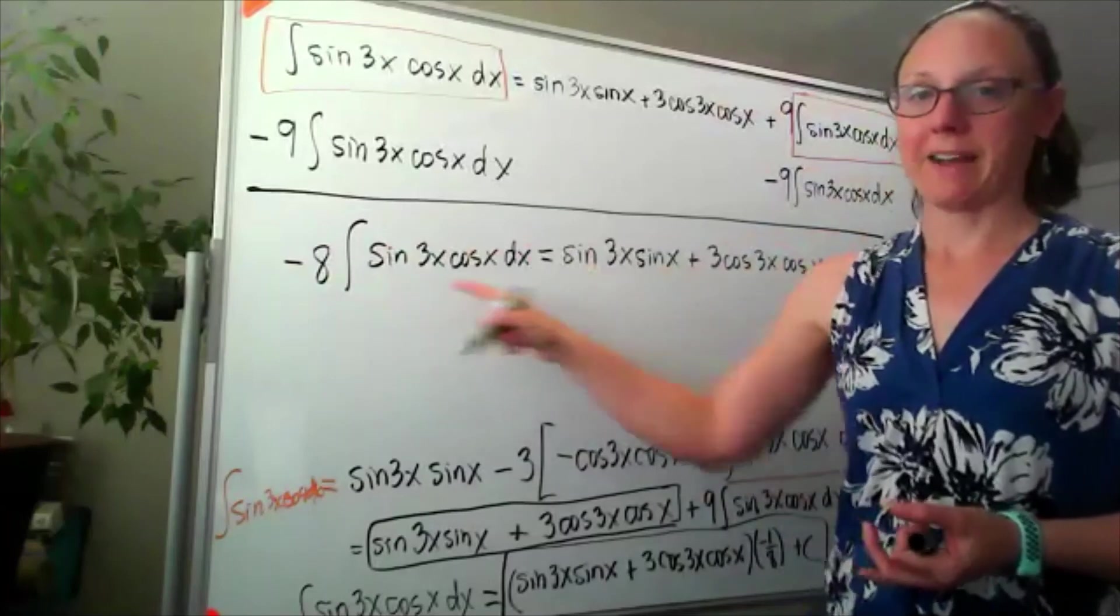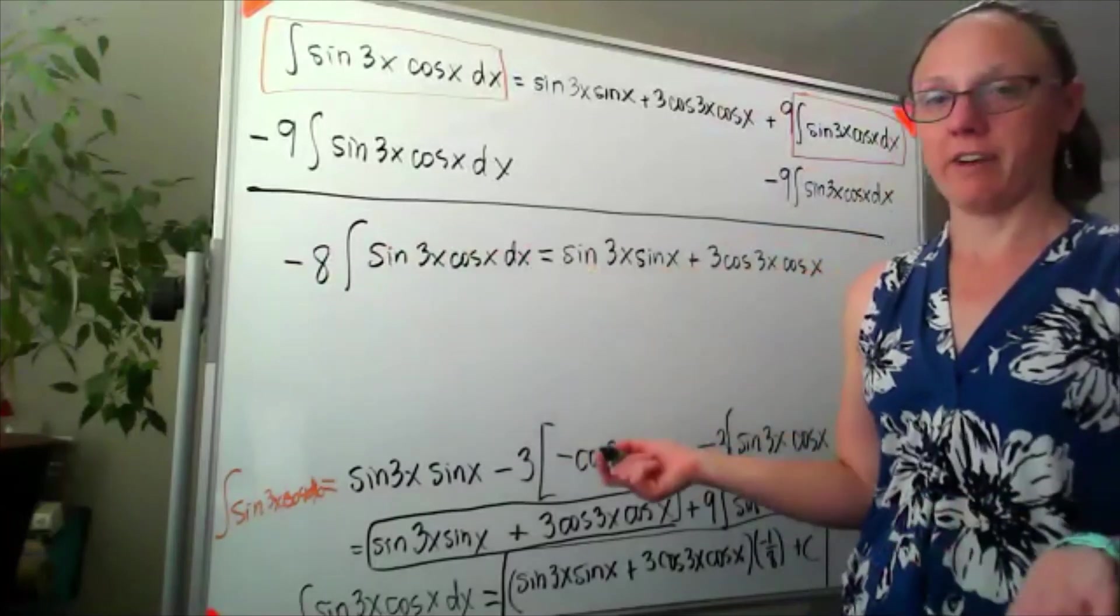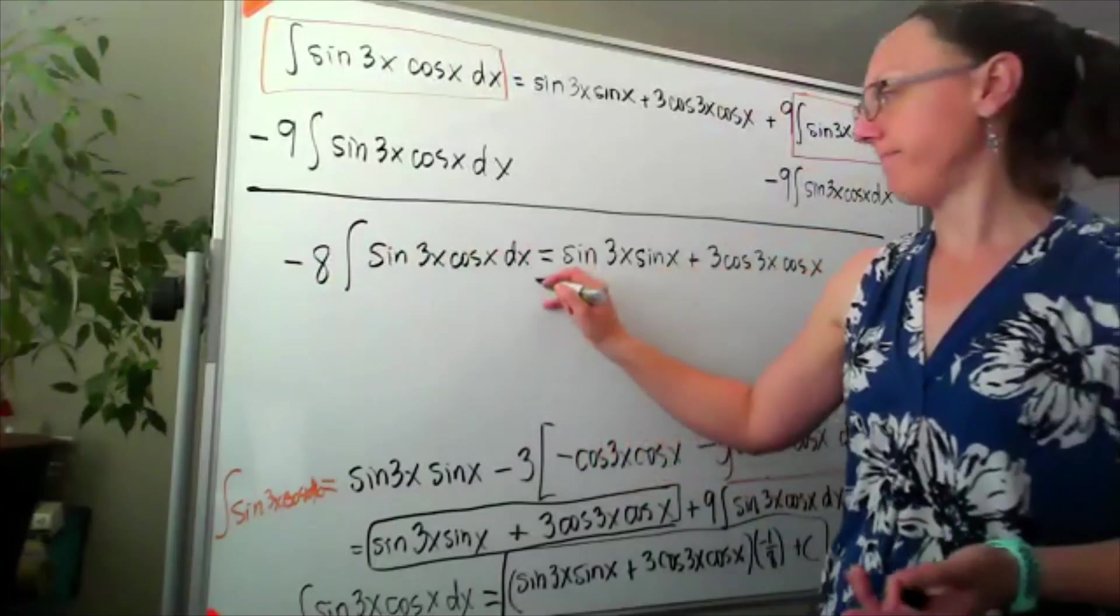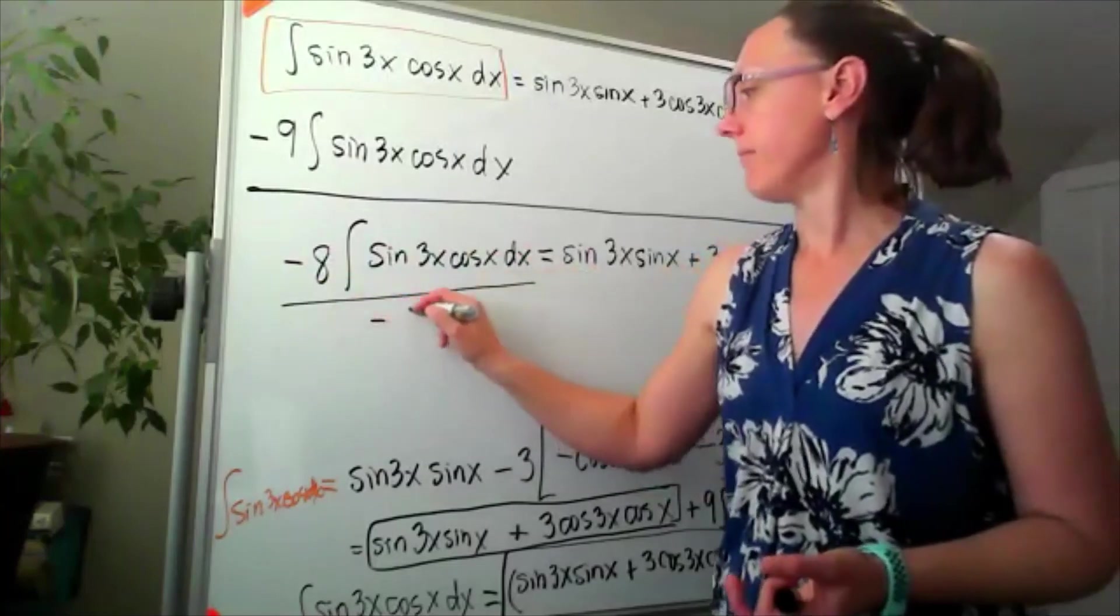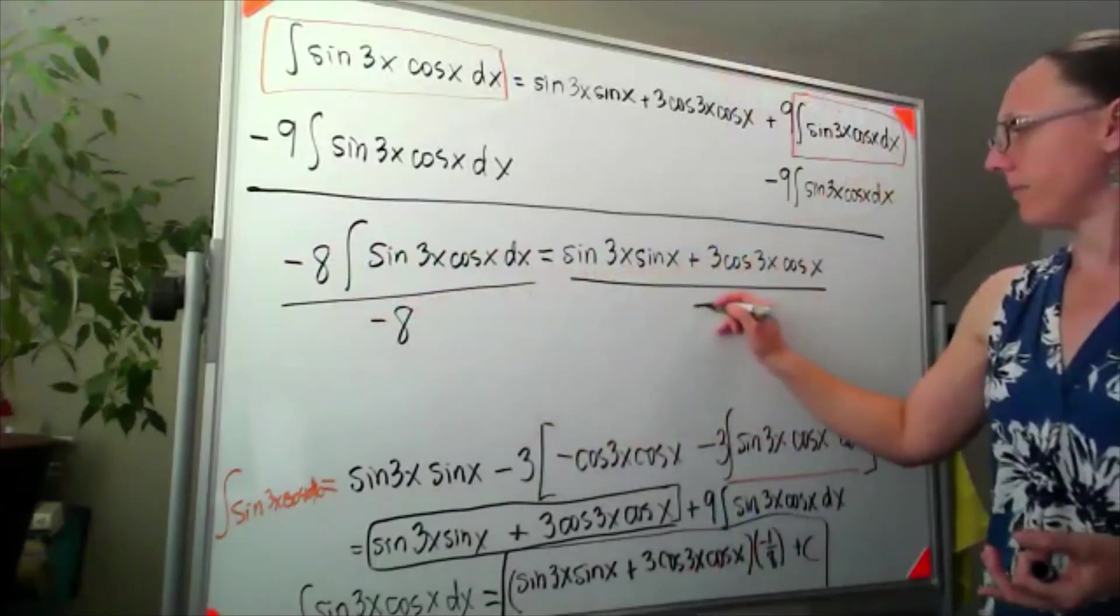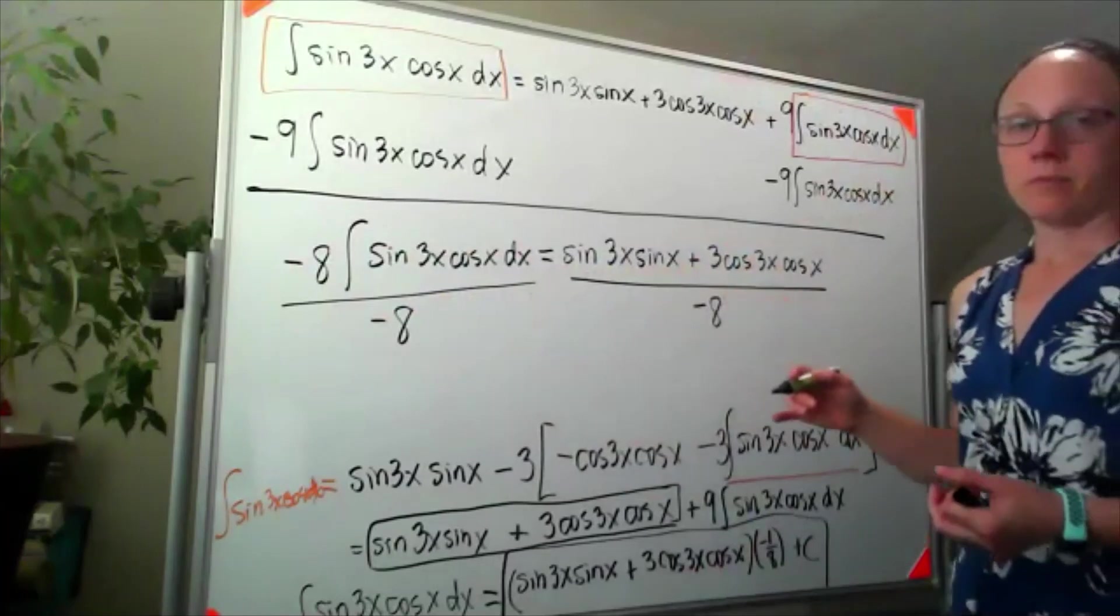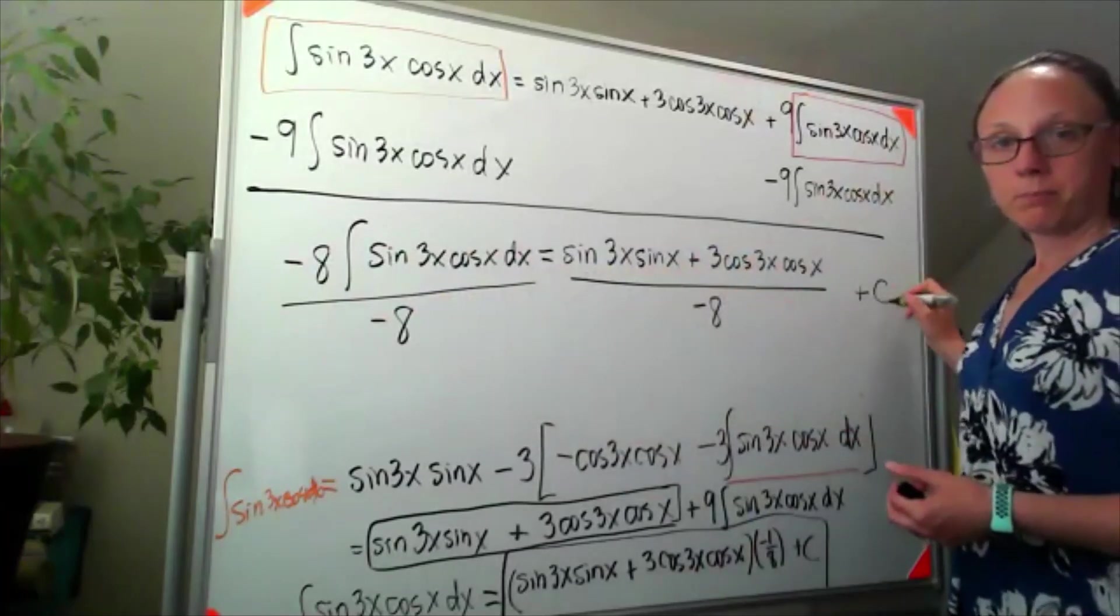And to get back to just what we want, I'm going to divide both sides by negative 8, plus C.